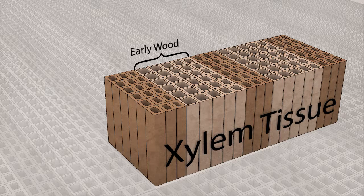Then, later in the year, as a tree's metabolism slows a bit, the growth slows down. Xylem is still being produced, but now the cells are smaller, cell walls are thicker, and the cells appear darker in color overall. We call this dark colored xylem tissue late wood.